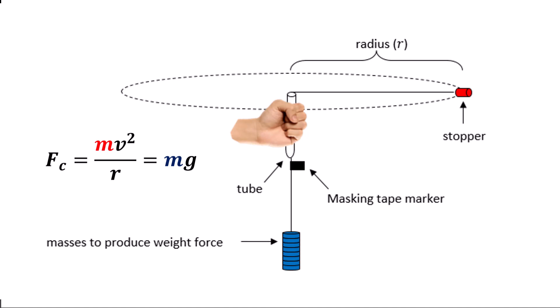The idea of this investigation is to measure the time it takes for 10 rotations to allow you to calculate the period, from which we can work out the velocity, the centripetal force, and equate that to the gravitational force of the mass set. We do that for six different variations of radius, and from that we can calculate the gravitational field strength g of Earth.